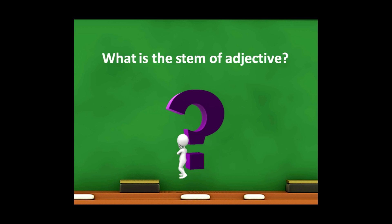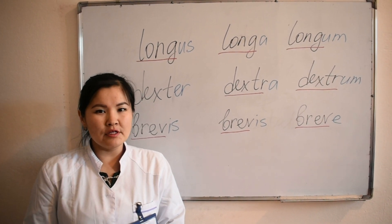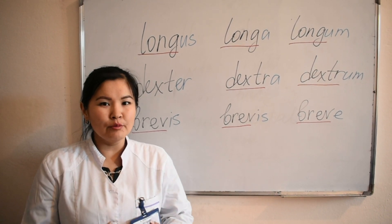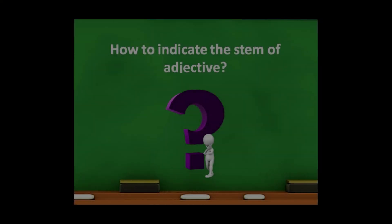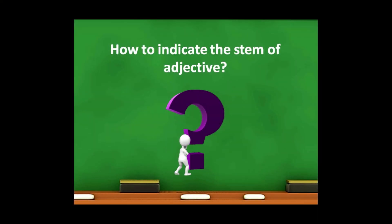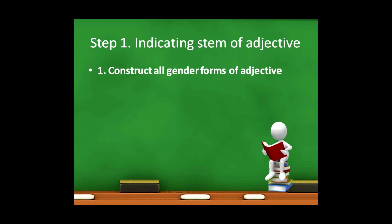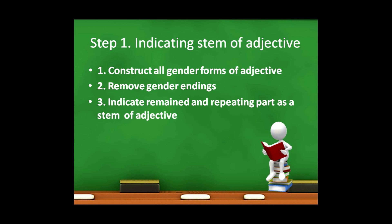What is the stem of an adjective? The base, or stem, of an adjective is the unchanged part of the adjective which repeats across the masculine, feminine, and neuter gender forms. To indicate the stem of an adjective, first we need to construct all gender forms, then remove the gender endings. After removing the gender endings, the remaining and repeating part will be the stem.